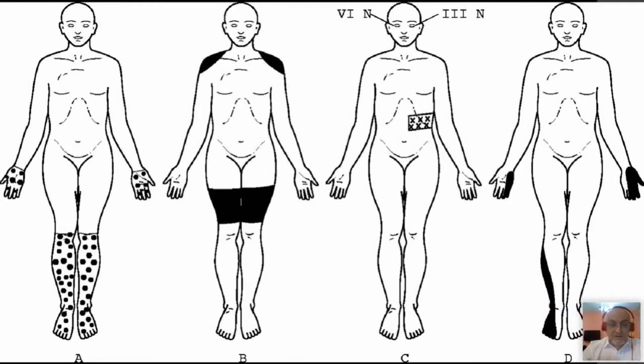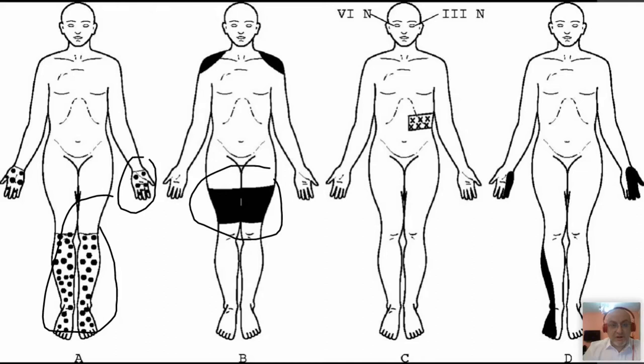This illustration explains the types of neuropathy. This is symmetric peripheral neuropathy. This is polyradiculopathy — here lumbosacral, and this is brachial. And here mononeuritis, and here mononeuritis multiplex.